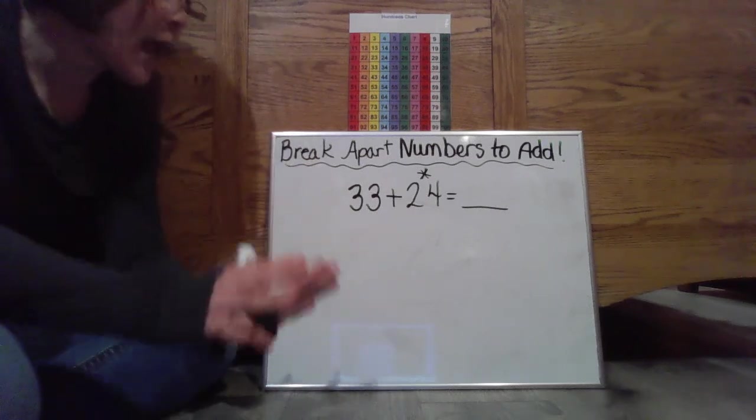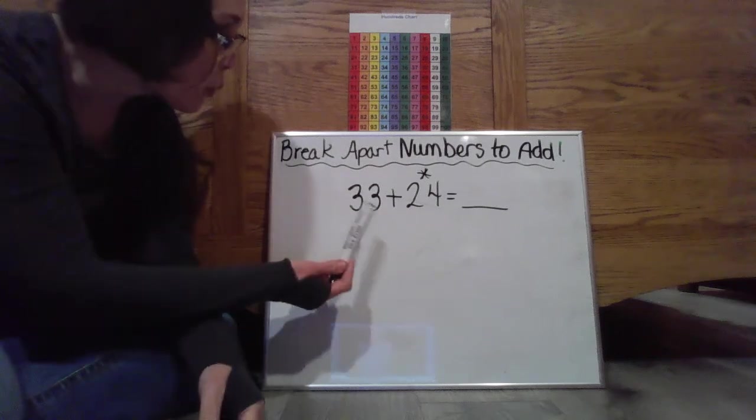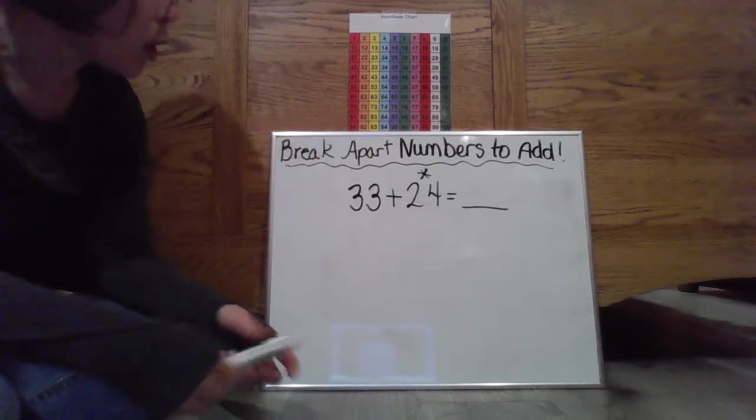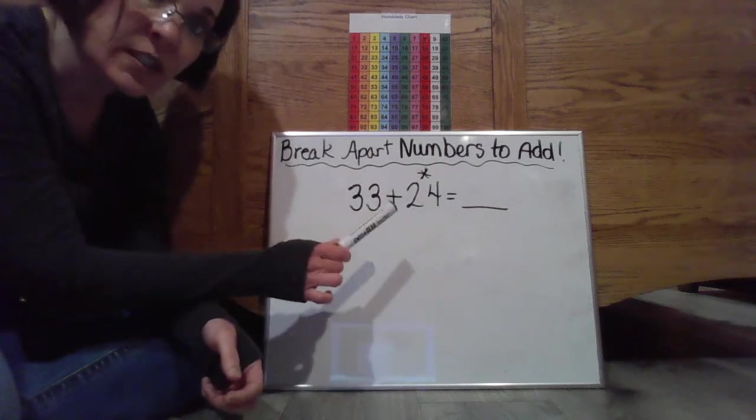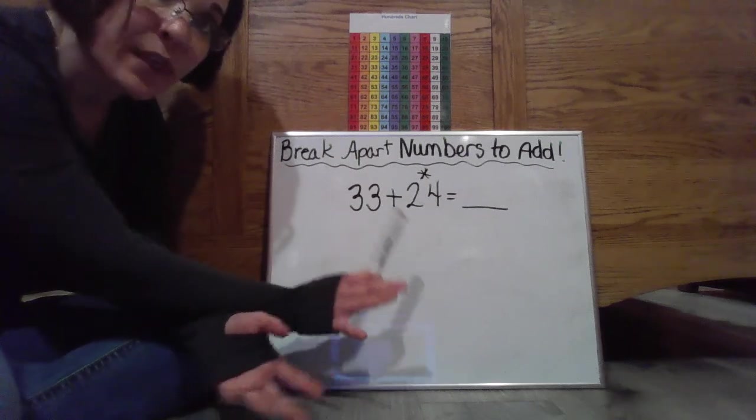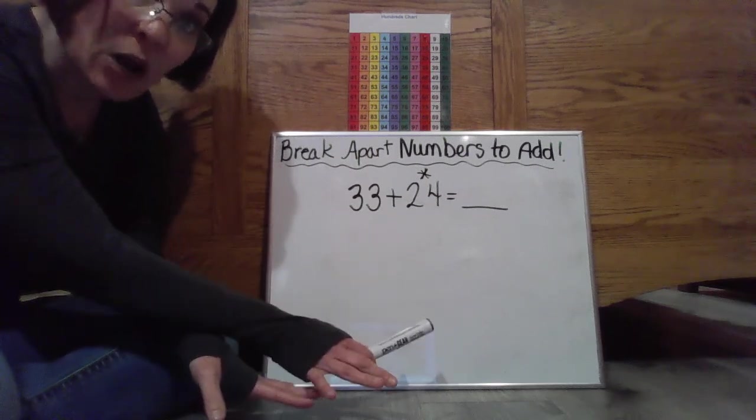So first let's go ahead and start with our first number sentence. So we have 33 plus 24 equals. So what I have here is the asterisk above 24 is because that's not only the smaller number but it's also the number that I'm going to break apart. I'm going to break it down.